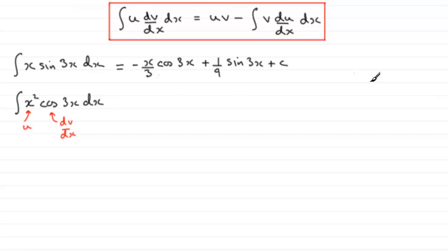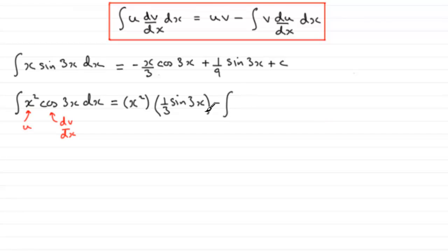Carrying on with integration by parts, it'll be the first part — the u part, which is x squared — multiplied by the integral of the second part. The integral of cos(3x) is going to be one third sine 3x, so we've got one third sine 3x. Now we minus the integral of the part we've just integrated, so we copy down one third sine 3x, and multiply it by the differential of the u part. The differential of x squared is 2x, and we integrate all of this with respect to x.